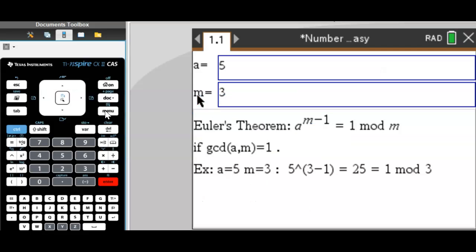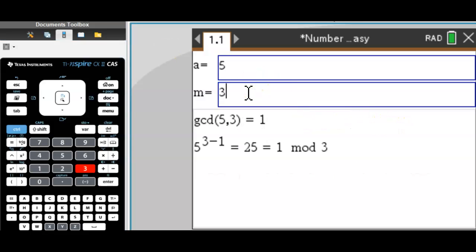Let me show you Euler's theorem. As you know, it's stated right here. As long as the integers a and m are co-prime, which means they're relatively prime and don't share common factors, Euler's theorem will give you 1 when a is raised to the power of m minus 1 mod m. Here's an example: if we have 5 raised to the 3 minus 1, we get 5 squared, 25, which equals 1 mod 3.